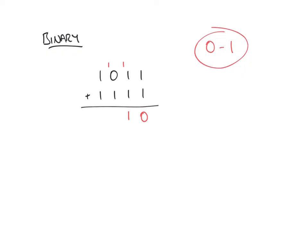Next we have 1 plus 0 plus 1, which is 2, so we carry that straight away, leaving no remainder. Finally we have 1 plus 1 plus 1 is 3; we carry one lot of 2 to the next column, left with a remainder of 1. The final column now only contains this carried 1, giving us 1. So our result of 1011 plus 1111 gives us 11010, and that's a binary number to the base of 2.